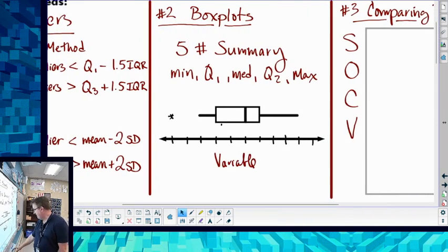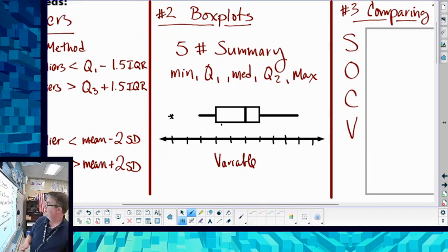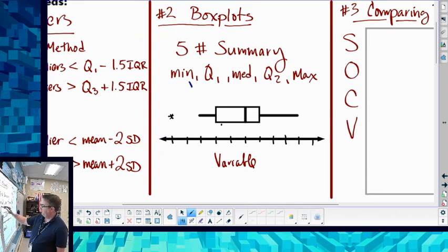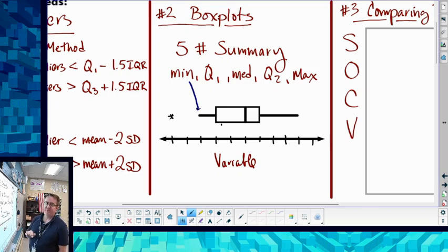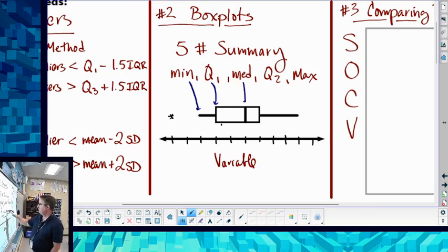Secondly, we have box plots. So you have a five number summary. The five numbers that you have is going to be your minimum, which is found there, your quartile one, which is the lower end of the box.